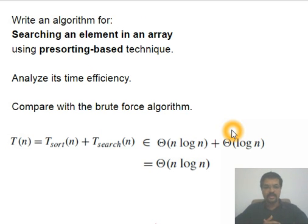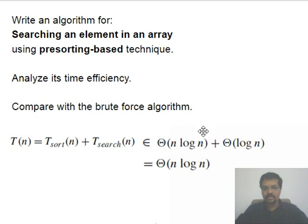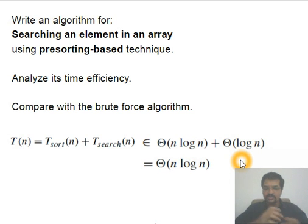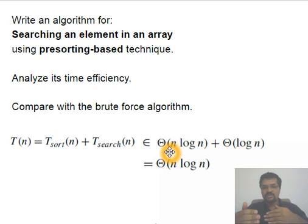Another classical problem is searching for an element in an array. Brute force sequential or linear search takes Θ(n) time. With pre-sorting, sorting takes Θ(n log n) and then binary search finds the element in Θ(log n), so overall it is Θ(n log n) — not better than even linear search for a single query. However, if we need to search many times after one sort, at some point the extra sorting effort is amortized. After a sufficiently large number of searches, this approach breaks even and then looks better.